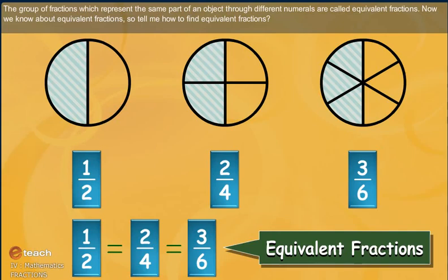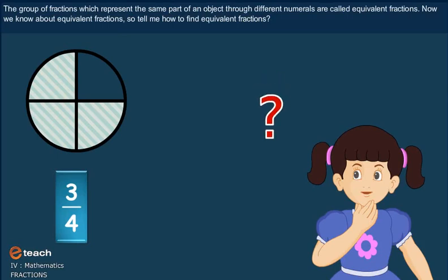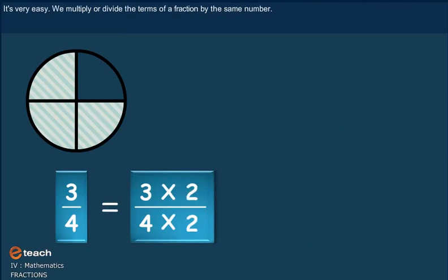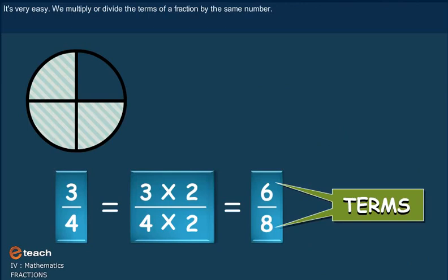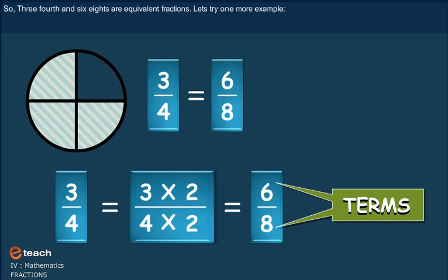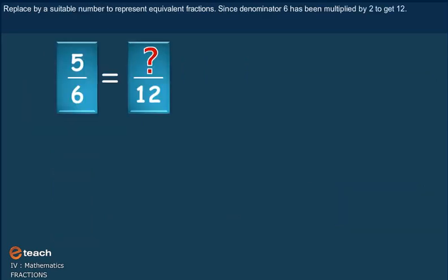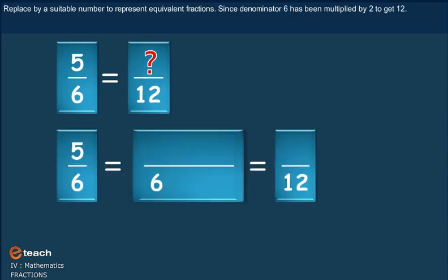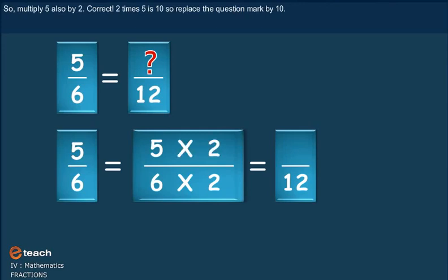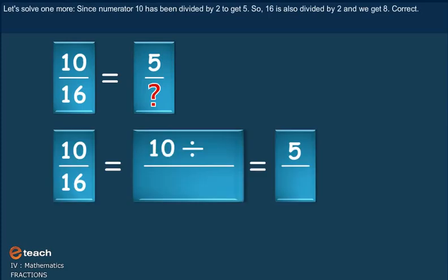The group of fractions which represent the same part of an object through different numerals are called equivalent fractions. Now we know about equivalent fractions. How do we find equivalent fractions? It's very easy — we multiply or divide the terms of a fraction by the same number. So, three fourth and six eighths are equivalent fractions. For example, to find the equivalent of five sixths: since the denominator 6 has been multiplied by 2 to get 12, multiply 5 also by 2 to get 10. So five sixths equals ten twelfths. Correct.